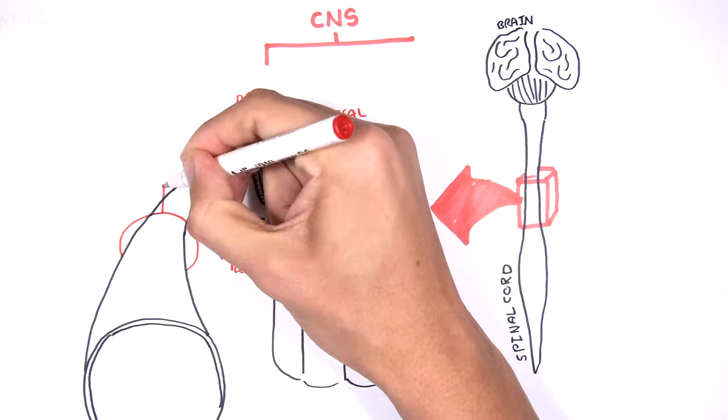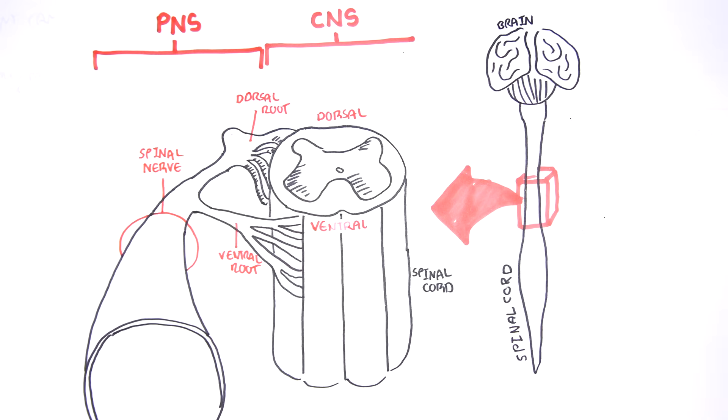And so this is a nerve. A nerve is not one neuron, but it's many neurons, all packaged up into this structure. Whereas the brain and the spinal cord is part of the central nervous system, the spinal nerves is part of the peripheral nervous system, or PNS.